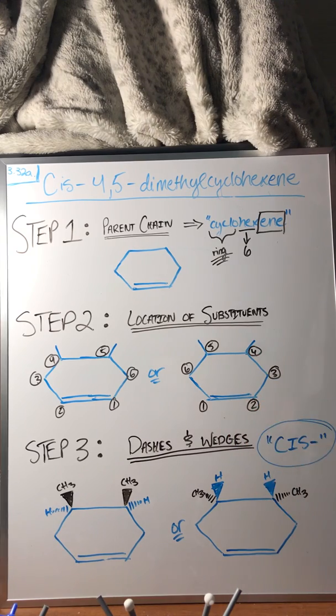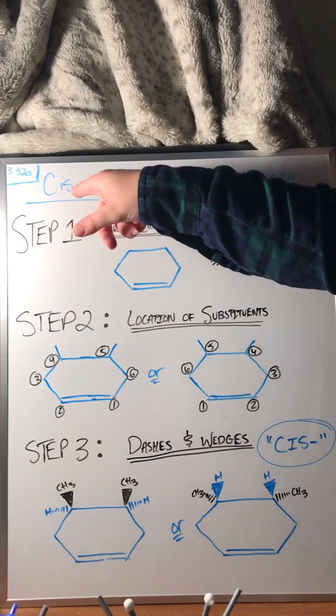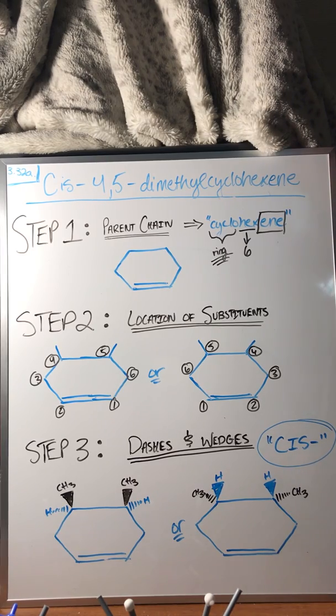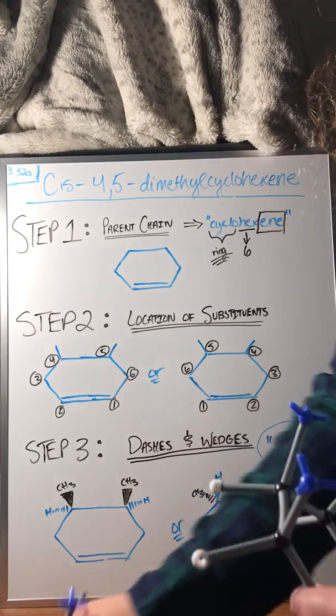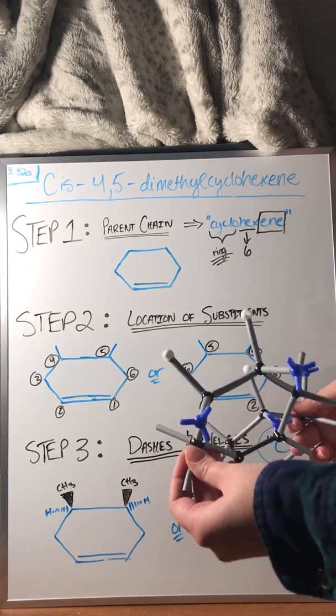And then step three we go to the dashes and wedges to indicate stereochemistry. Because we have that cis up here we just can't leave that hanging. Cis indicates that the substituents will be in the same direction. I formed some molecules beforehand with my model set to kind of show you guys how this is going to go.